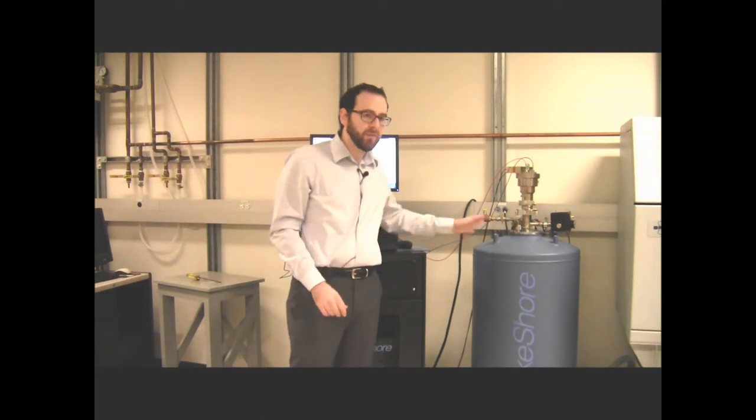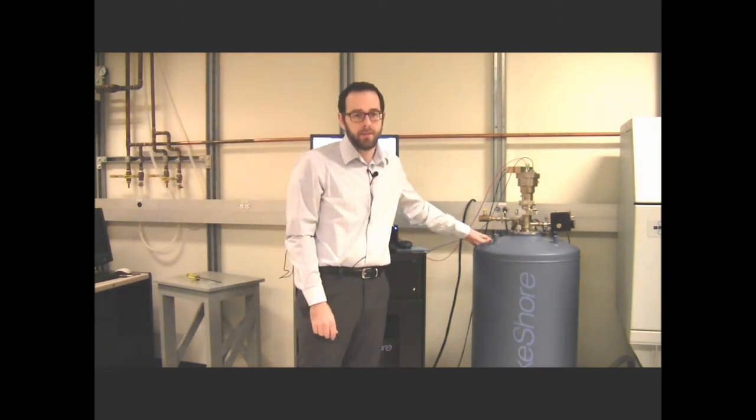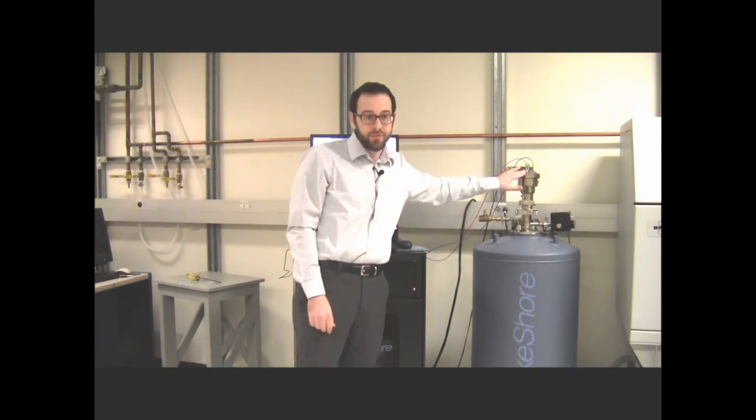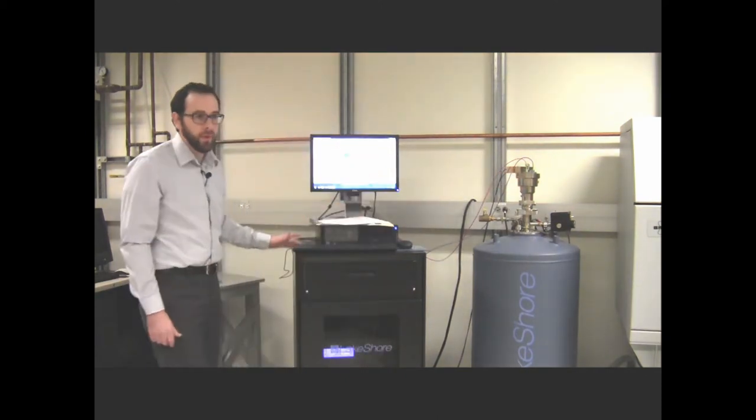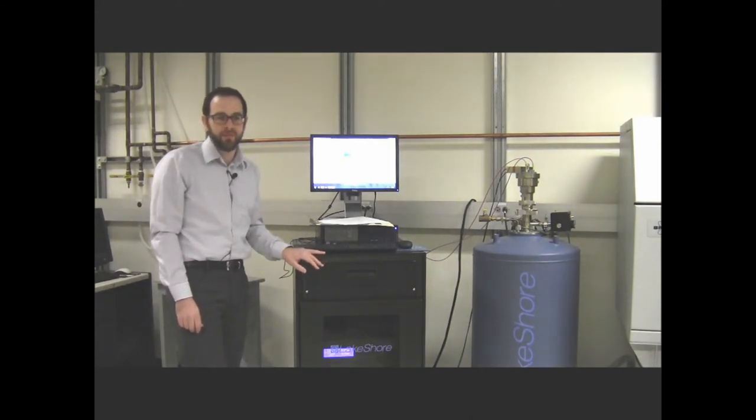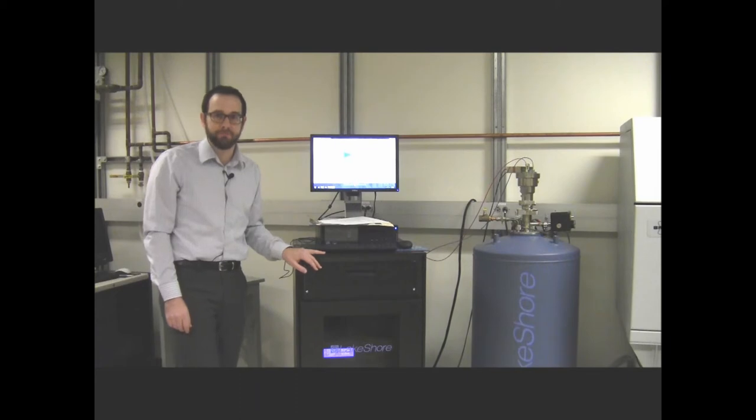The system consists of a nine tesla high magnetic field cryostat, a terahertz sample insert, and the console with software control of instrumentation to control all three of those parameters: the terahertz, the magnetic field, and temperature. In conventional terahertz measurements at cryogenic temperatures, steering mirrors and lenses are required to focus terahertz frequency light onto your sample to do your measurements.